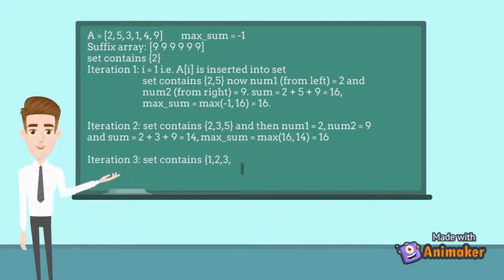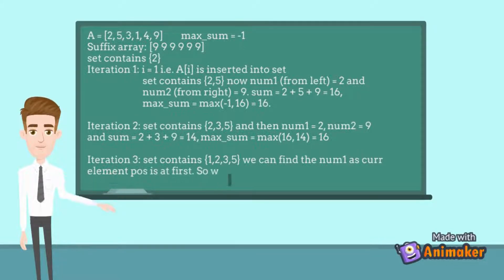Similarly for iteration 2, we get the sum as 2 + 3 + 9 which equals 14. The max sum variable will contain the maximum value of sum, that is equal to 16.